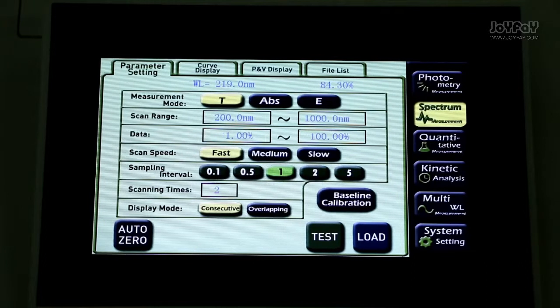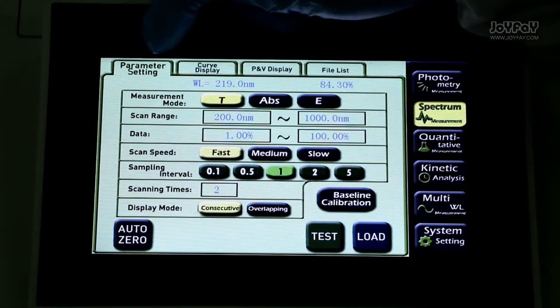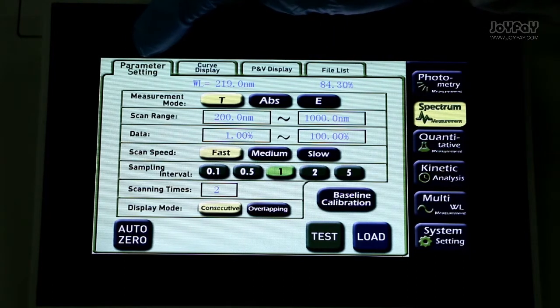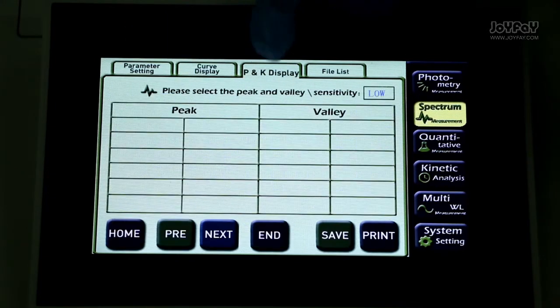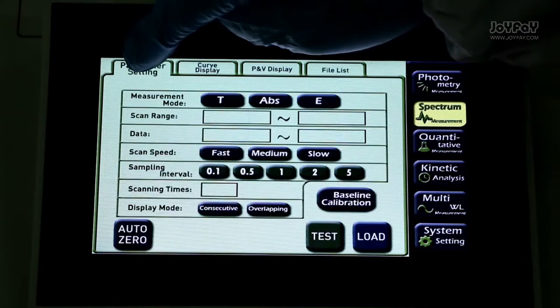By pressing spectrum measurement button, move to the second measurement. You can see the functions are much more complex than the first one. There are four tags: parameter setting, curve display, P and V display, and file list.